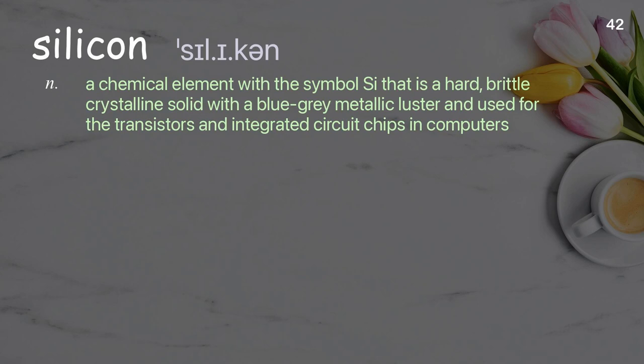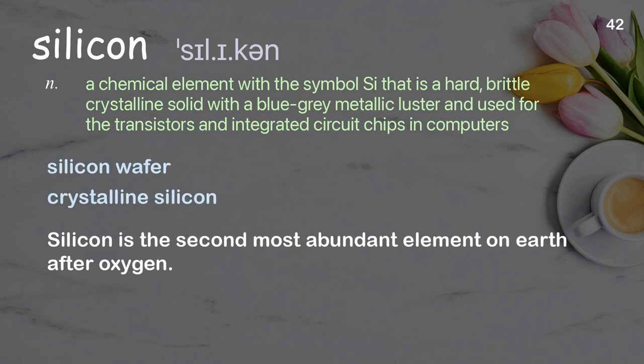Silicon. A chemical element with the symbol Si that is a hard, brittle crystalline solid with a blue-gray metallic luster, used for transistors and integrated circuit chips and computers. Examples: silicon wafer, crystalline silicon. Silicon is the second most abundant element on earth after oxygen.